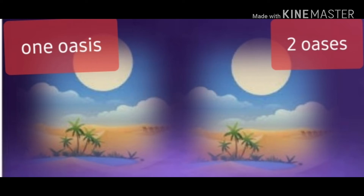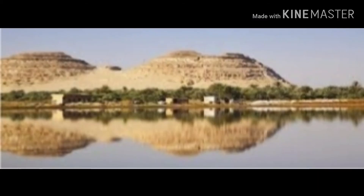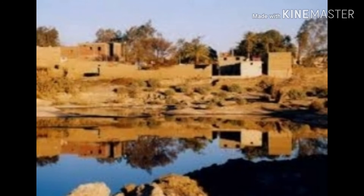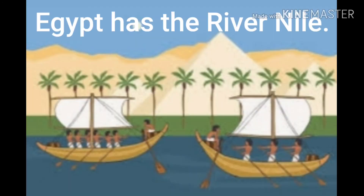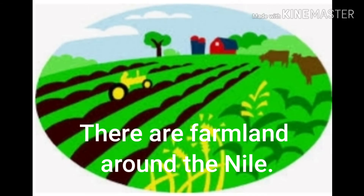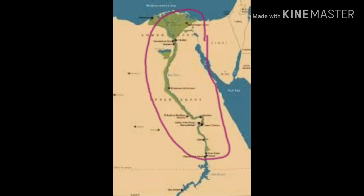Look! One oasis with the letter I, but two oases with the letters E-S. This is an oasis, and this is another oasis. Egypt has the River Nile. There is farmland around the Nile. Look at this map — can you see the green? All the green areas are farmland.